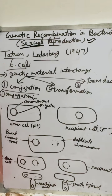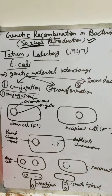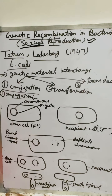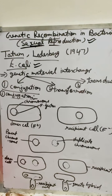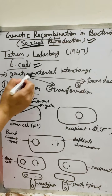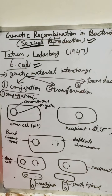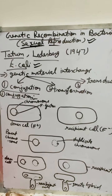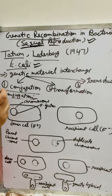The first scientist is Tatum and Lederberg, who in 1947 discovered and described genetic recombination in E. coli — Escherichia coli. They said there is a genetic material interchange, and that is called genetic recombination.